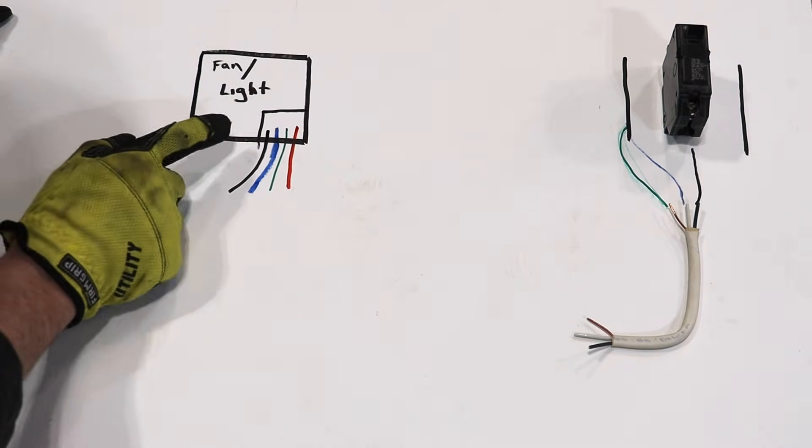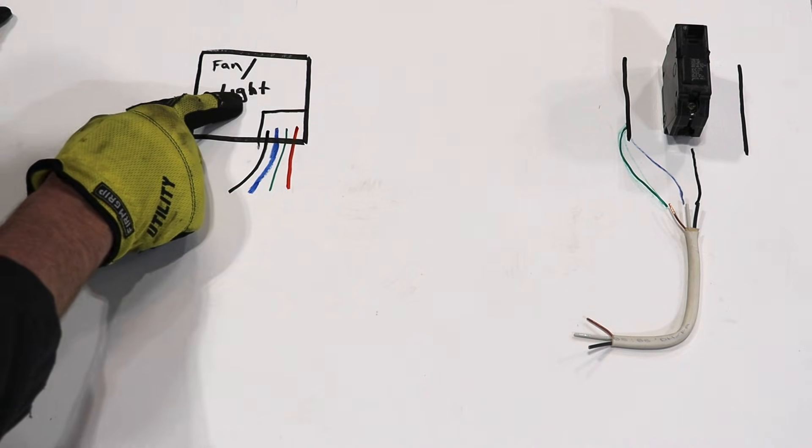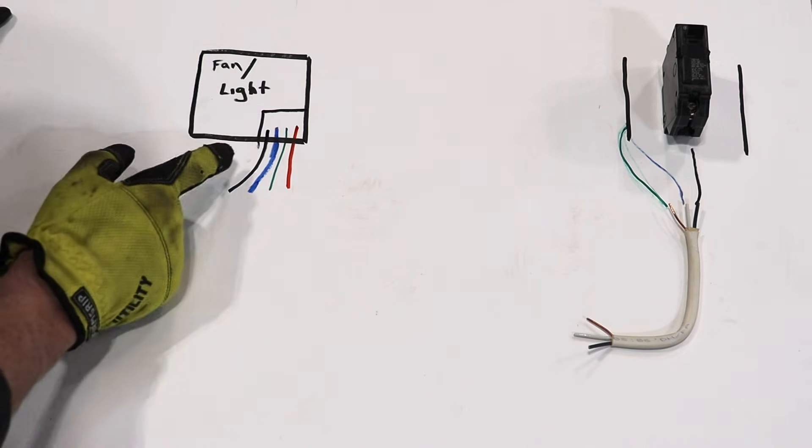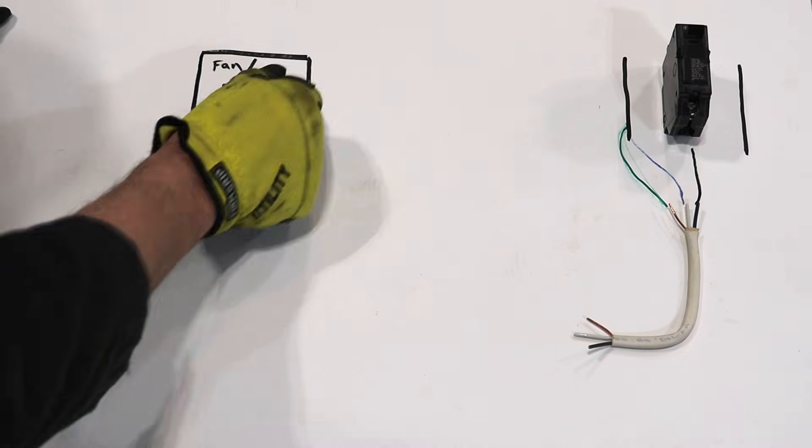So what happens here is the black wire will power the fan or the light. It'll be one of the two. So let's just say the black wire here powers the light, the red wire powers the fan.